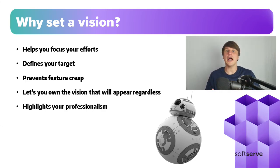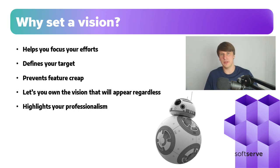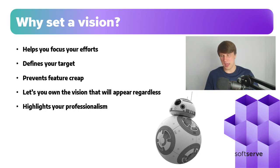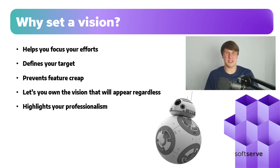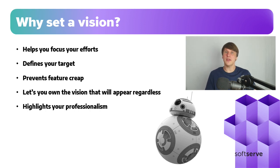So why set a vision? Why do you need a simple sentence like that in order to progress with your product? First of all, it helps you focus your efforts — it tells you where to go and what you want to achieve, just like we said with the example. It defines your target so everyone is aware of what you actually want to achieve. It prevents what's called feature creep, where you just develop features for feature's sake which don't really make too much sense and complicate the product. Whenever you have an option to do something, you can ask yourself: does it make sense? Does it meet the vision?